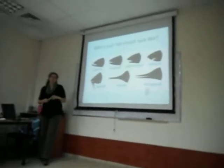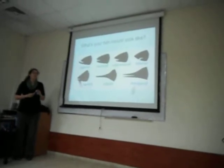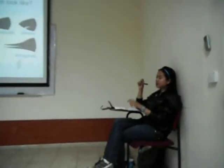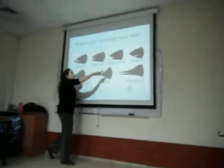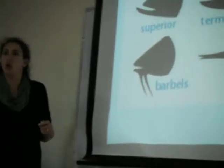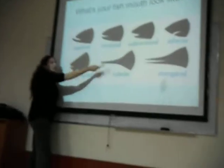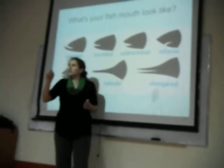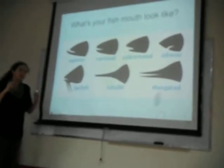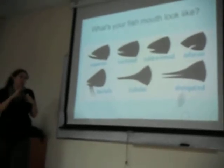For example, look at the superior and the inferior. They can both be carnivores that eat live protein. This one will eat mosquito larvae from the water surface, and this one will eat small worms from the ground. They are both carnivores, but they have different food because of how their mouth looks like.